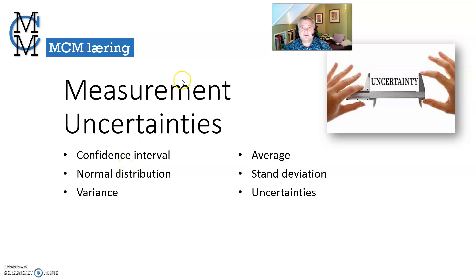Measurement uncertainties. We will go through these six elements: confidence interval, normal distribution, variance, average, standard deviation, and general uncertainties.